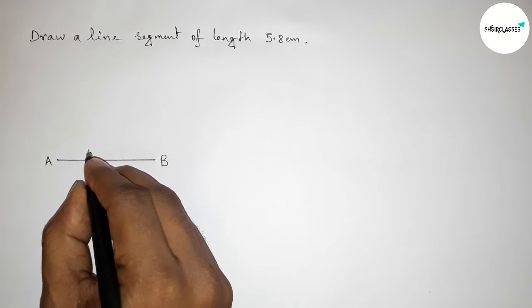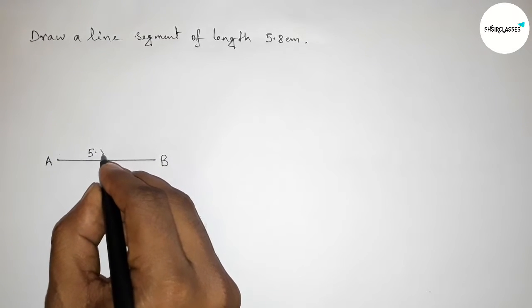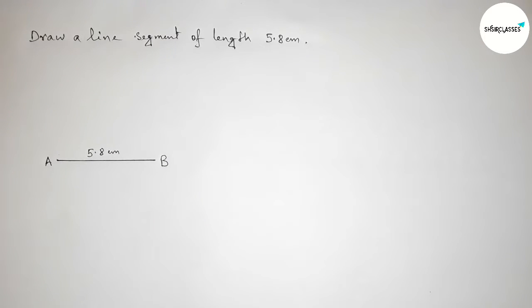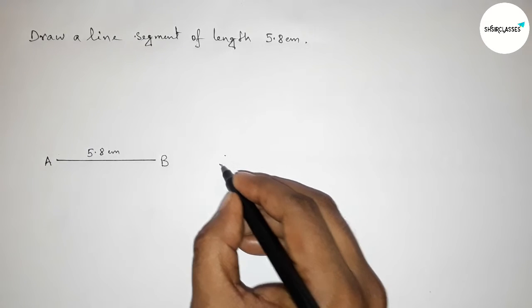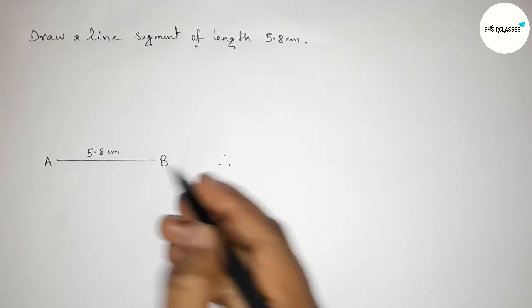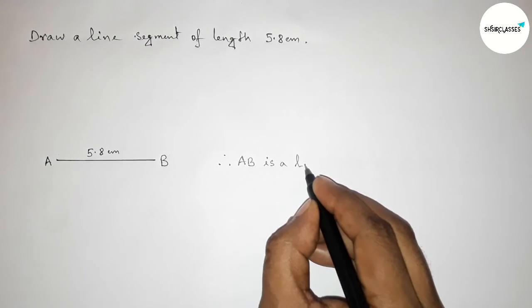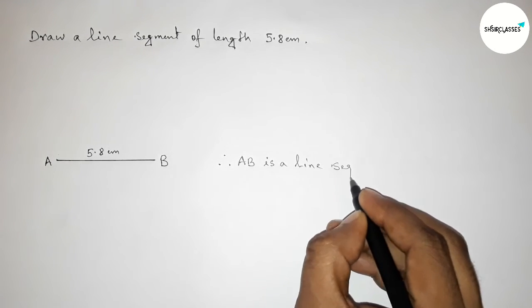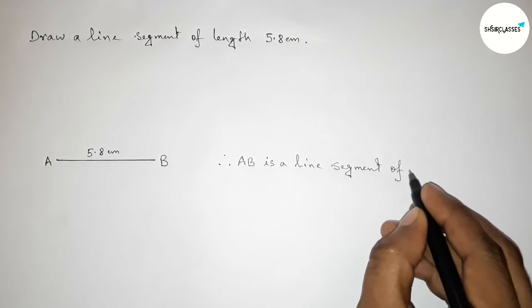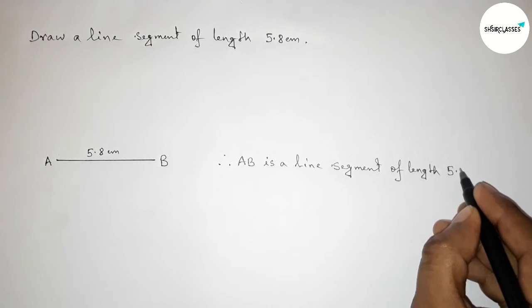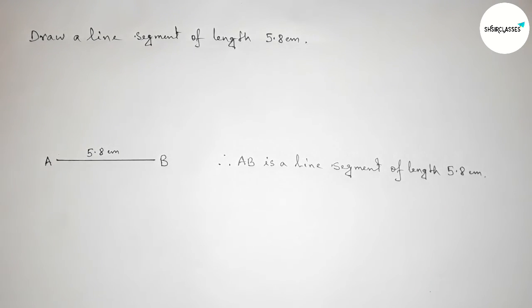Therefore we can say that AB is a line segment of length 5.8 centimeter with the help of scale. You can draw, okay. So that's all, thanks for watching. If this video is helpful to you, then please share it with your friend. Thanks for watching.